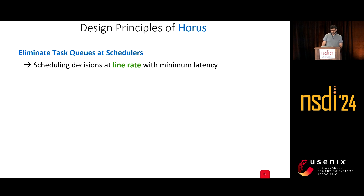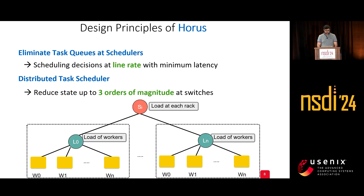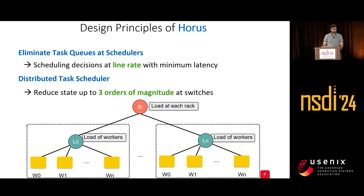The design principles of HORUS are as follows. First, we eliminate task queues at the schedulers entirely, enabling scheduling at line rate with minimum latency. We also design our schedulers to be distributed, which reduces the state load on switches by up to three orders of magnitude in the topologies we considered, since the load is divided across all schedulers in the network.